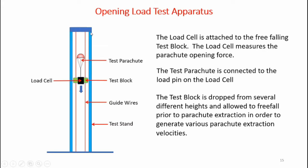Here's my test apparatus. I have two eight-foot two-by-fours used to suspend two guide wires that run from the top of the rig down to the floor. This test block is free to slide up and down the guide wires with very little friction. To the test block I've attached the load cell, which measures the parachute opening loads. The parachute system is attached to the load pin on the load cell, and the test block is allowed to free fall for a certain distance prior to deploying the parachute. As the parachute descends and opens, the opening loads are measured by the load cell.